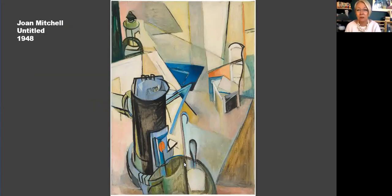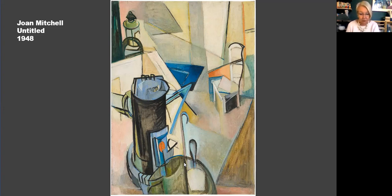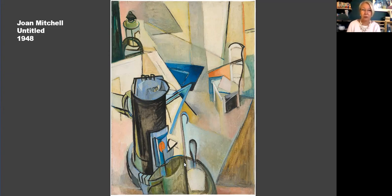Poetry was important to Mitchell, and reading it was part of her painting process. As a girl she was both a serious art student and an accomplished athlete — a Midwestern junior ice skating champion — which has consequences for the kind of painting she does, athletic and strong. She went to Smith College and received her degree from the Art Institute of Chicago. She traveled in Europe, where her paintings moved towards abstraction, and met her husband, who later founded Grove Press, in 1949. Returning to New York, she soon had a reputation as one of the leading younger American Abstract Expressionist painters. She exhibited regularly in New York and maintained close friendships with many New York School painters and poets, though she returned frequently to France. She divorced her husband in 1952, the year she had her first gallery show, where we see this work, Lyric.